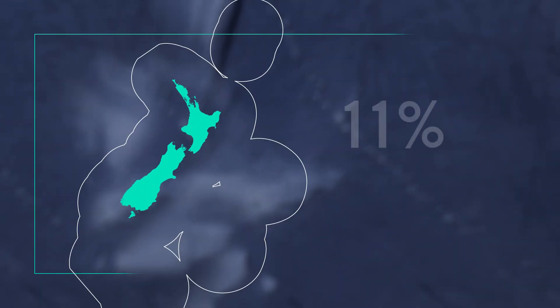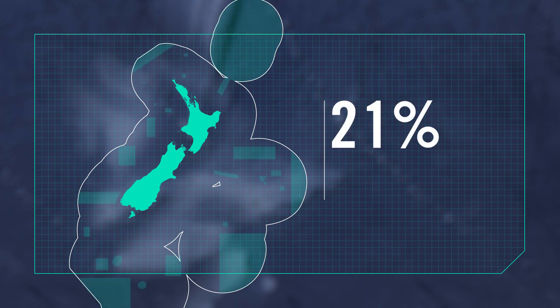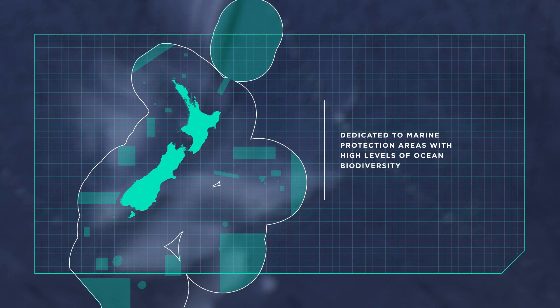In fact, 90% of New Zealand's exclusive economic zone has never been trawled, and roughly 31% of our exclusive economic zone is permanently closed to trawling, dedicated to marine protection areas with high levels of ocean biodiversity.